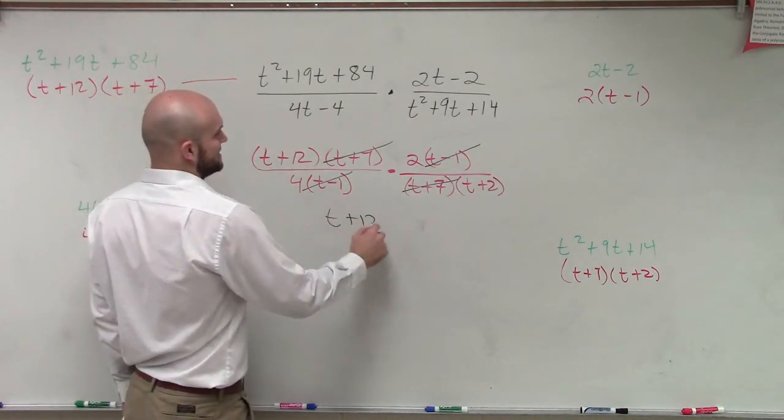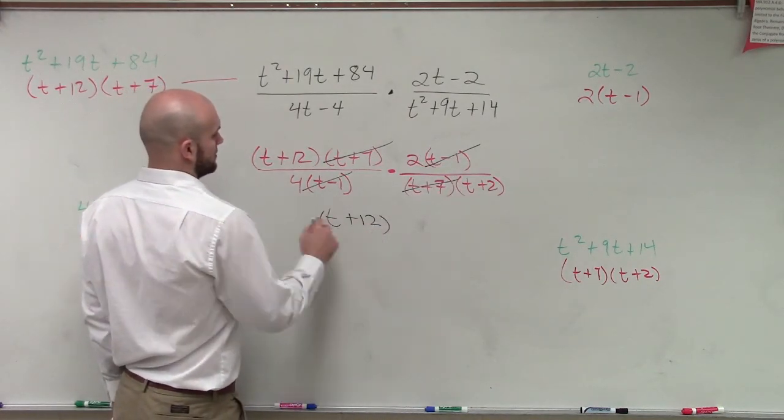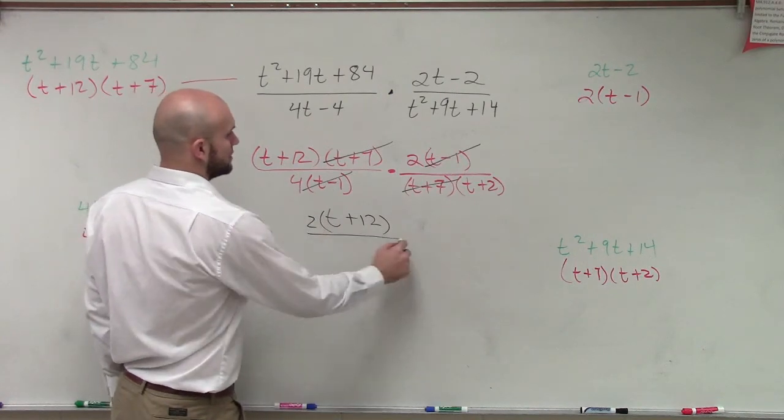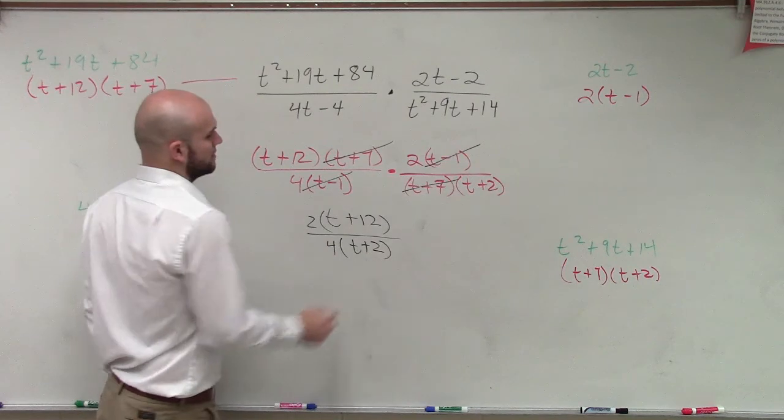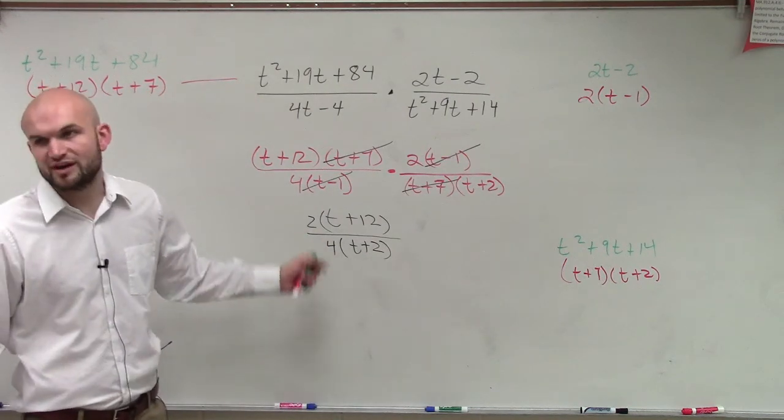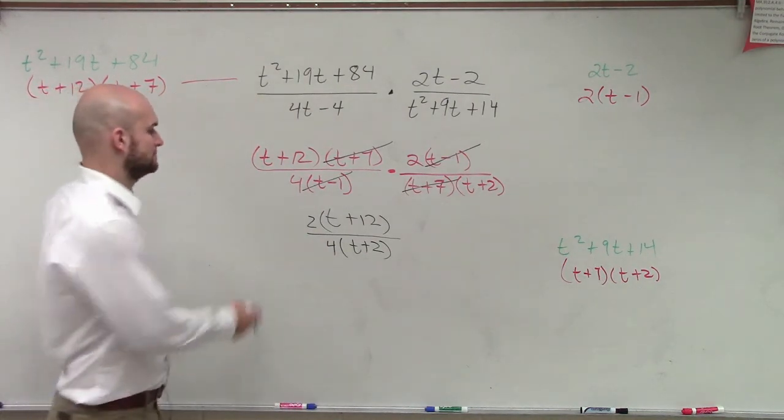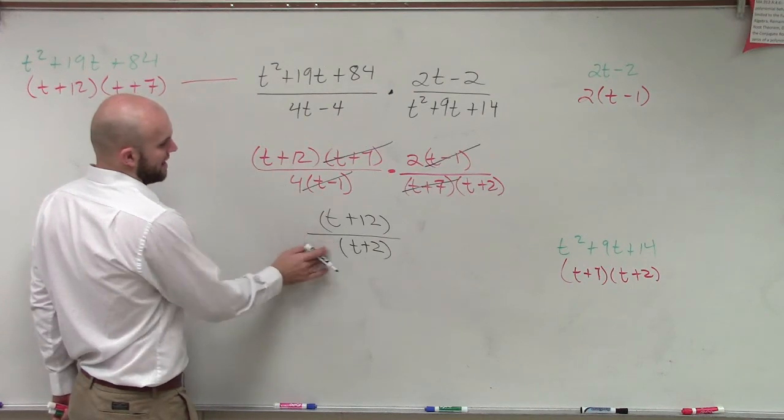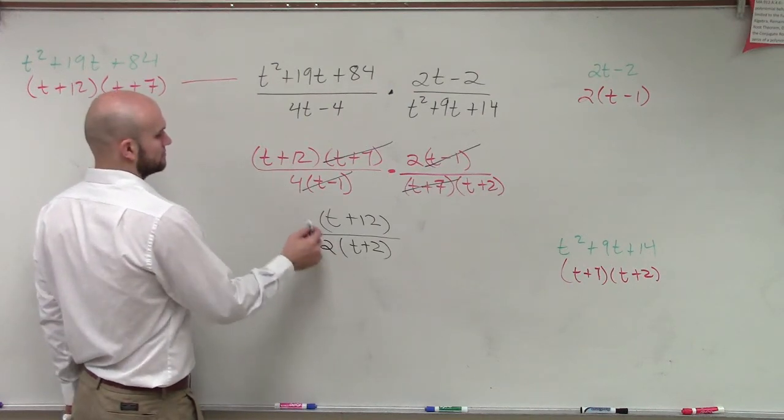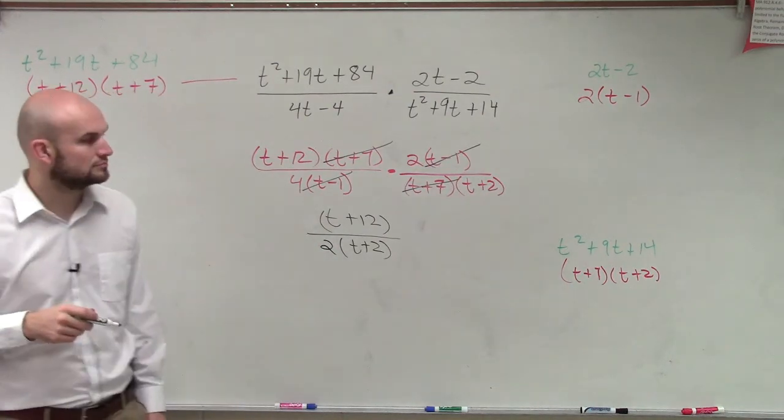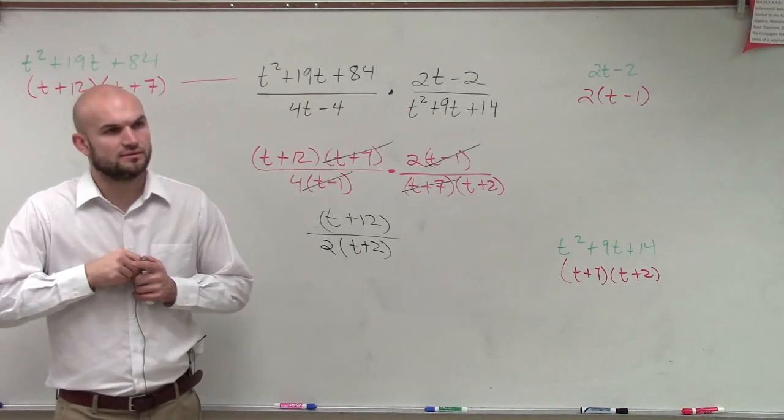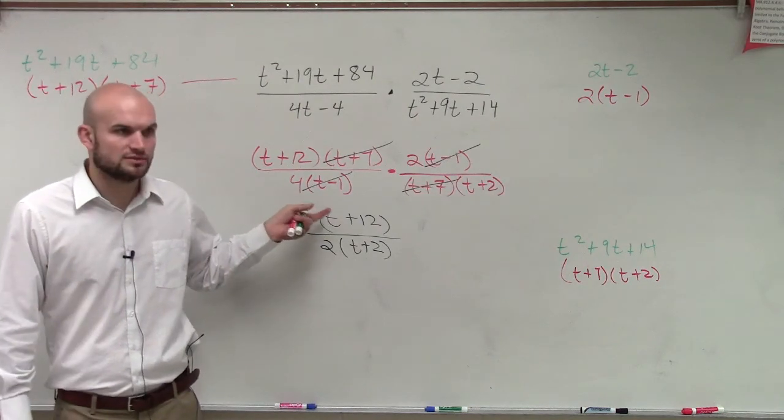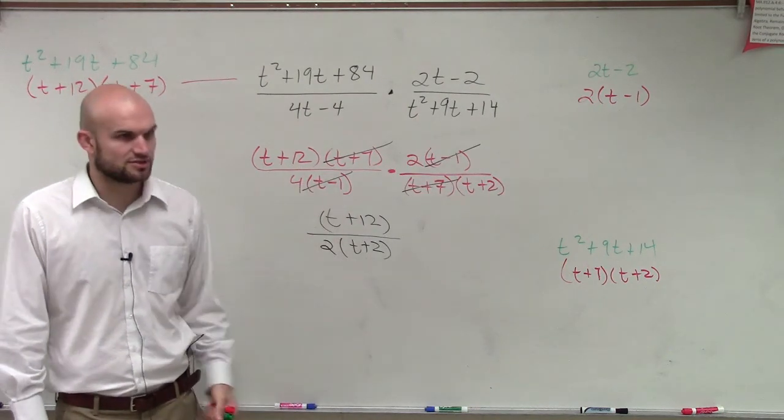And obviously, we know that 2 divided by 4, that simplifies, right? So that simplifies to 1 half. And there you go. You just leave it outside, right? You don't need to write the 1 there, because 1 times t plus 12 is still t plus 12.